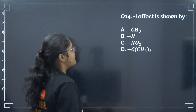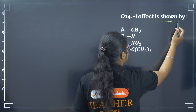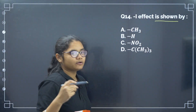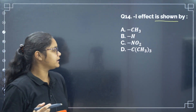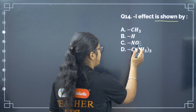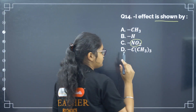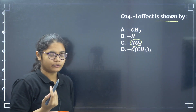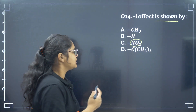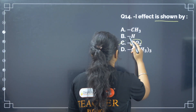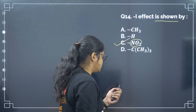Next easy question: minus I effect is shown by? Electronegative elements show minus I effect. NO2 is highly electronegative and pulls electrons towards itself. Correct answer is option number C.